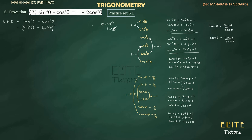If you look at the expression, you can remember the formula: a squared minus b squared equals a plus b times a minus b. If we look at what we have, this is a squared minus b squared, where a is sine squared theta and b is cos squared theta. So we apply this formula.